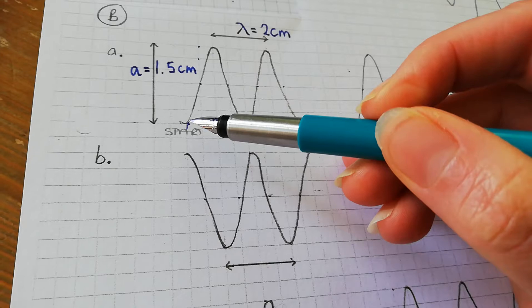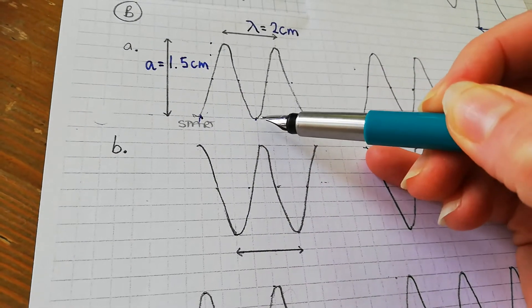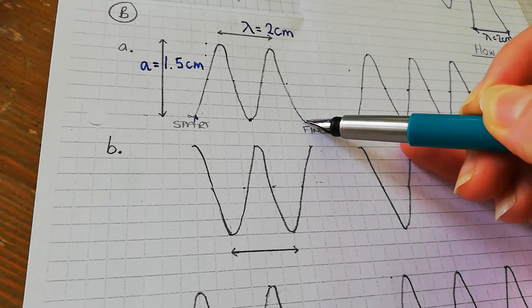So how you do it here, you start here - this is zero waves, we haven't had any waves yet. By the time we've got here, we've got one complete wave, and here two complete waves.